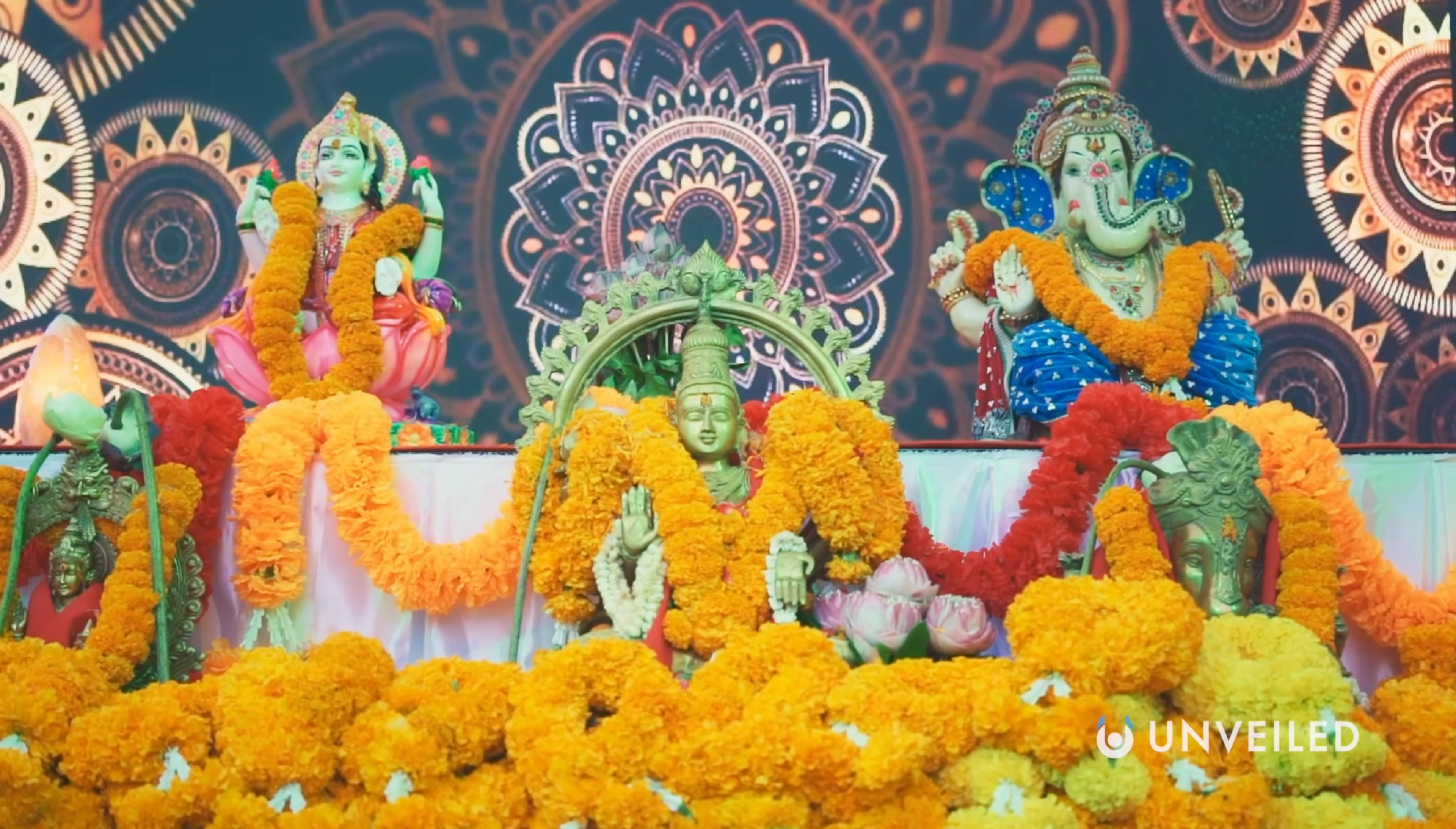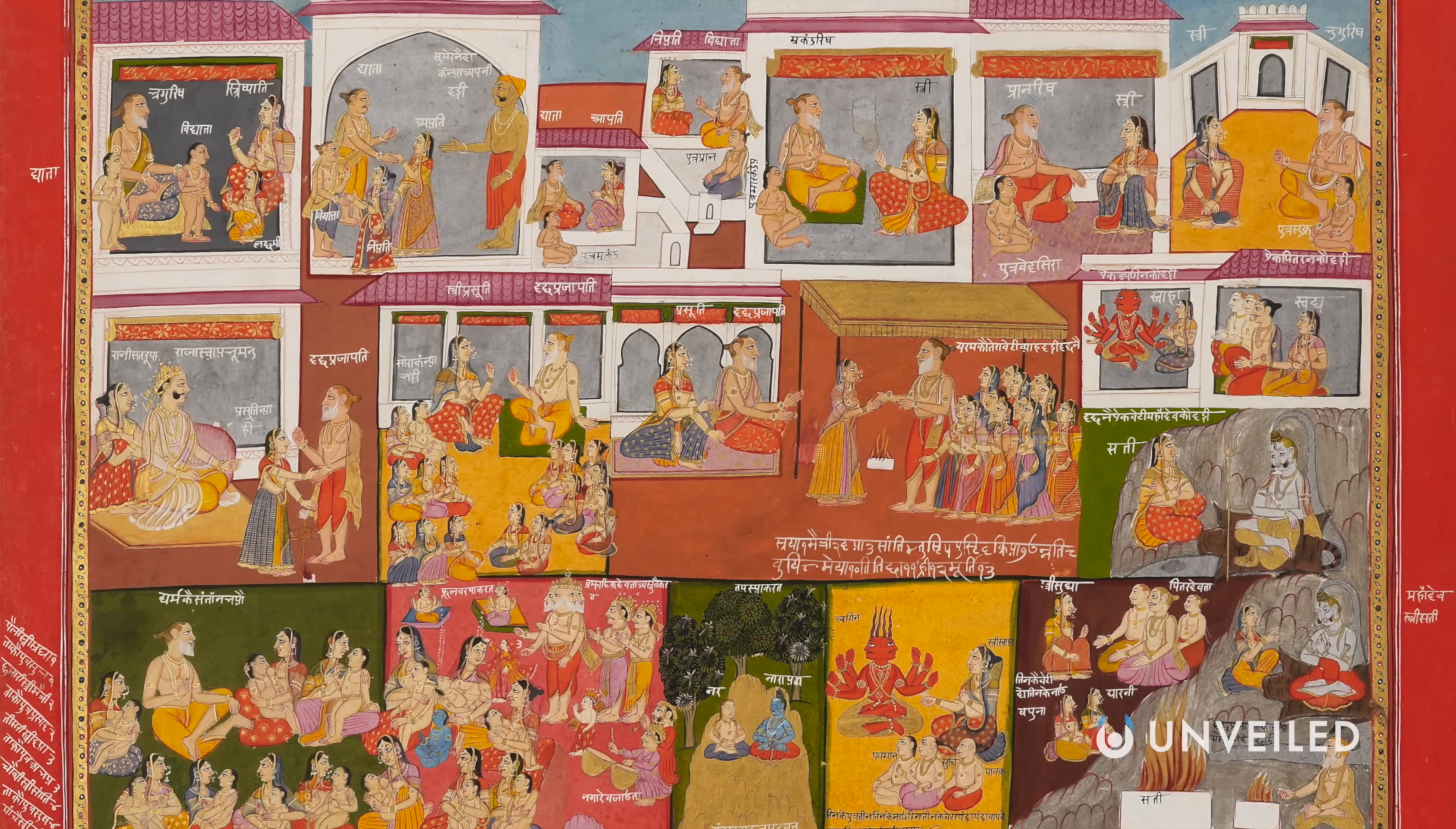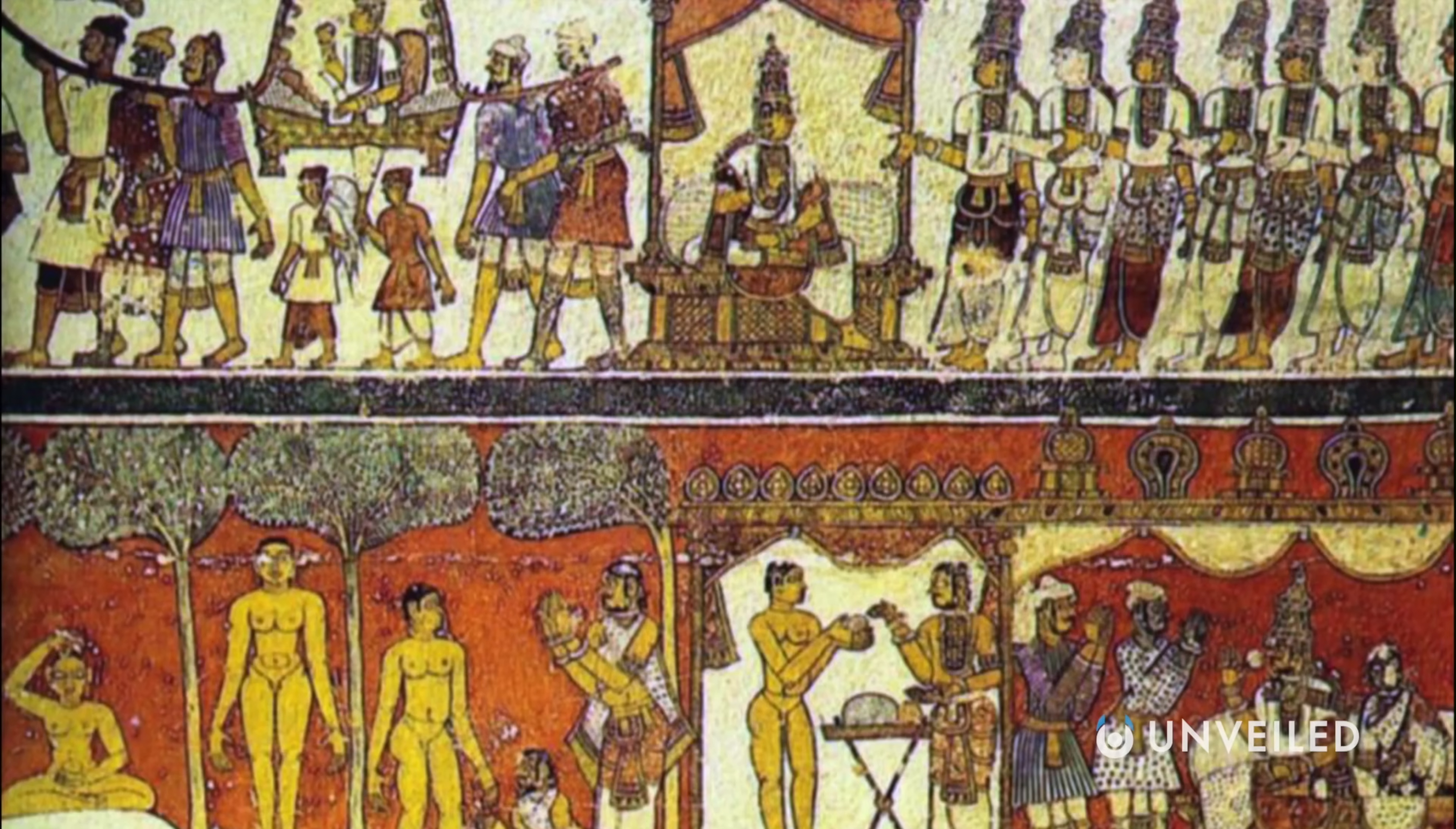Descending into the lower Lokas, one moves from the realms of peace and order to those of chaos and torment, with the worst being Naga Loka, the home of demons, snake people, and immorality. This hierarchy once again serves as a reflection of the human soul, which rises and falls through the different planes, based on their moral choices and the karma that results.